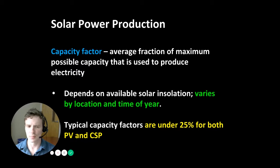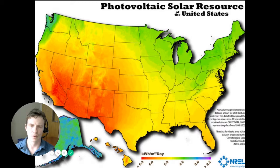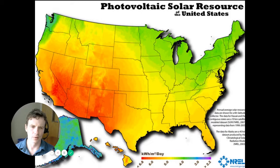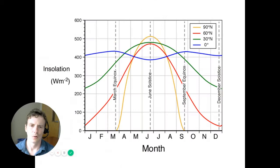Solar capacity factor can also vary geographically. A map shows how photovoltaic solar resource potential varies throughout the United States. The warmer colors — red and orange — represent places where you get more electricity per square meter per day using solar panels, while green areas represent places where you get less. The main differences come from solar insolation, which combines how much sunlight reaches different parts of the Earth in clear sky conditions with the impacts of cloud effects.